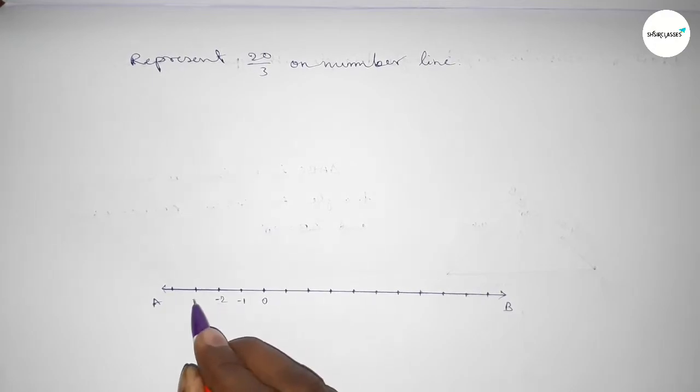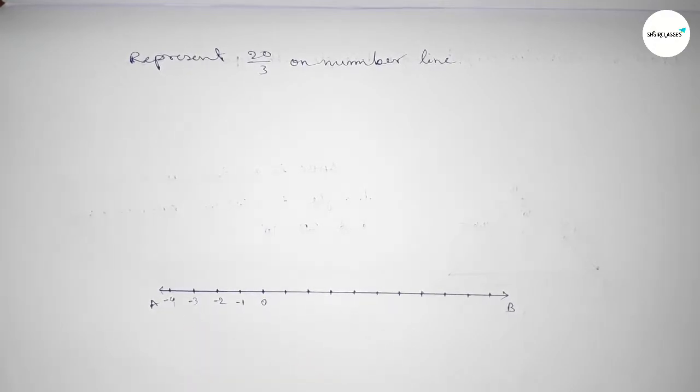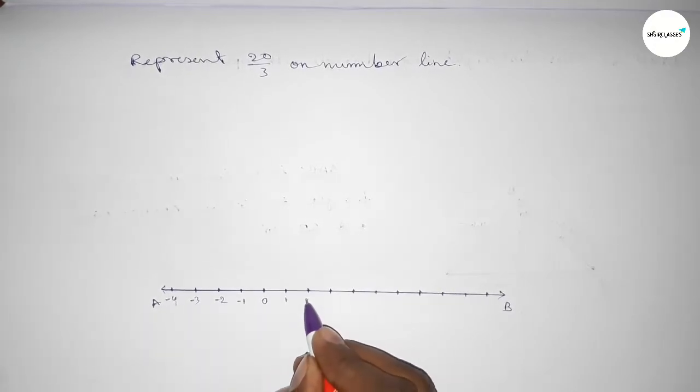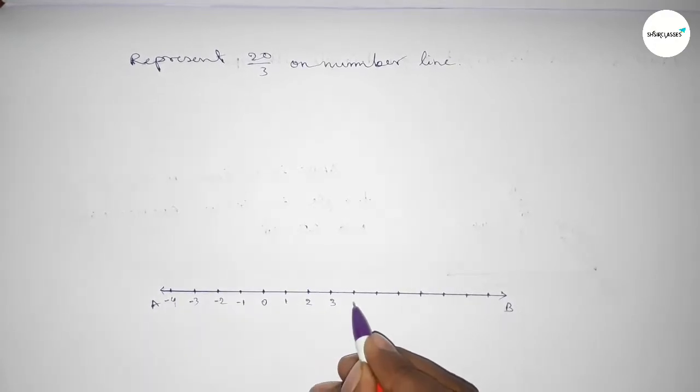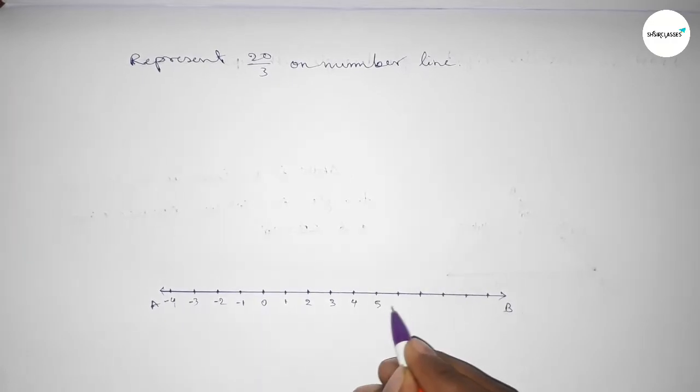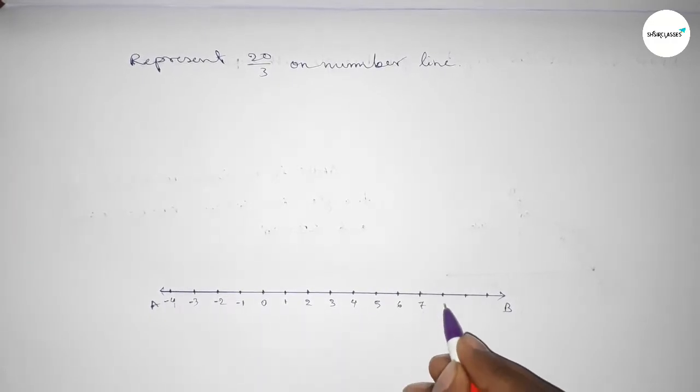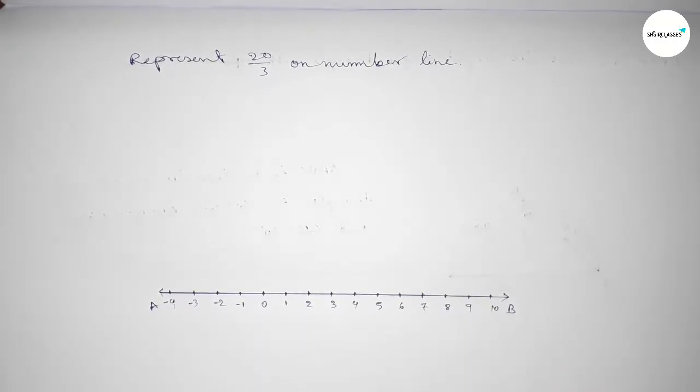Taking the starting number zero, this side minus 1, minus 2, minus 3, minus 4, and this side 1, 2, 3, 4, 5, 6, 7, 8, 9, 10.